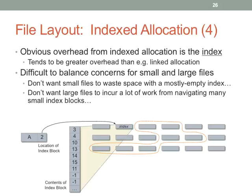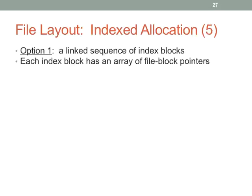If you have a good B-tree implementation, this kind of indexing becomes really straightforward, and sequential access is also straightforward. ext2 is a tree data structure that is very unbalanced. One option is a linked sequence of index blocks: each index block has an array of file pointers. Instead of linking data blocks, we link index blocks, and index blocks say where the data blocks are — we've introduced a level of indirection. The last pointer in an index block either says that's it, or here's the next index block. Good for small files since you can load one index block.